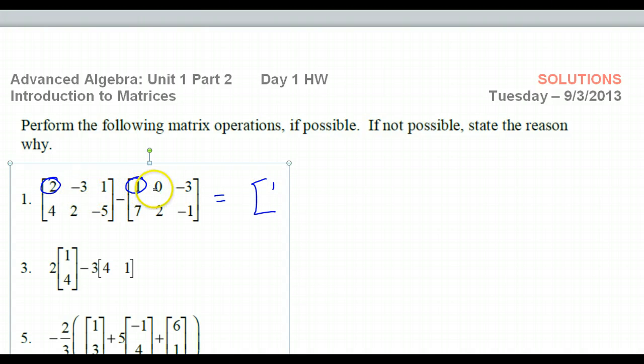And then negative 3 minus 0 is just negative 3. 1 minus negative 3, be careful. When you do minus a negative, like 1 minus negative 3, please understand that that is addition. That's the same thing as 1 plus 3, which is 4.